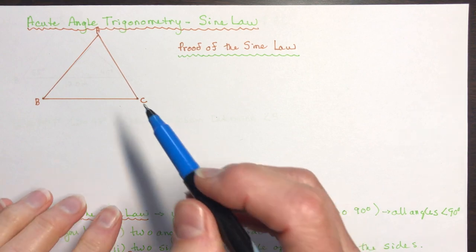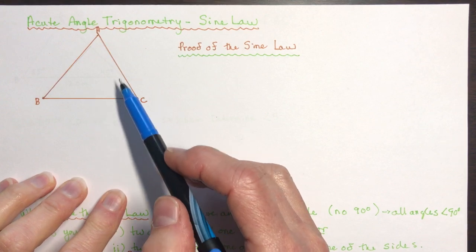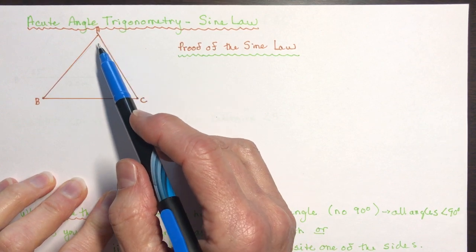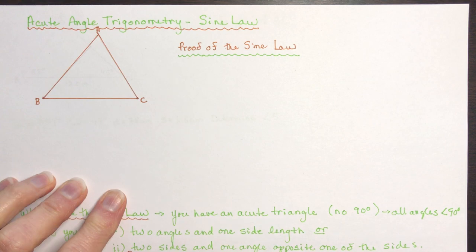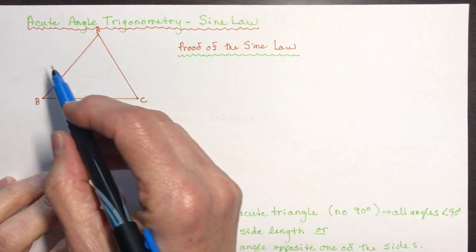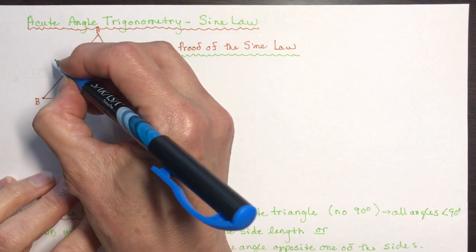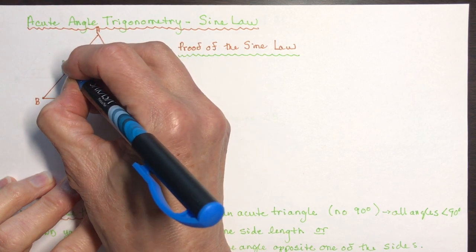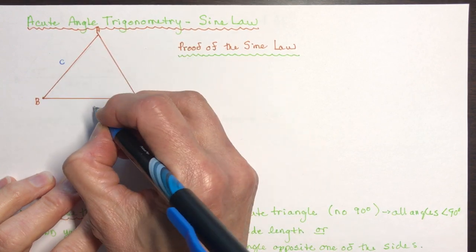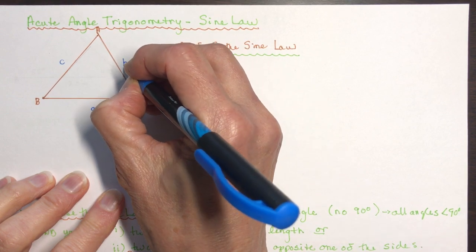We have a triangle here, ABC — it's an acute triangle. An acute angle triangle means all the angles are less than 90 degrees. The sides are labeled with the lowercase letters of the vertices opposite from them: this would be side c, this would be side a, and this would be side b.